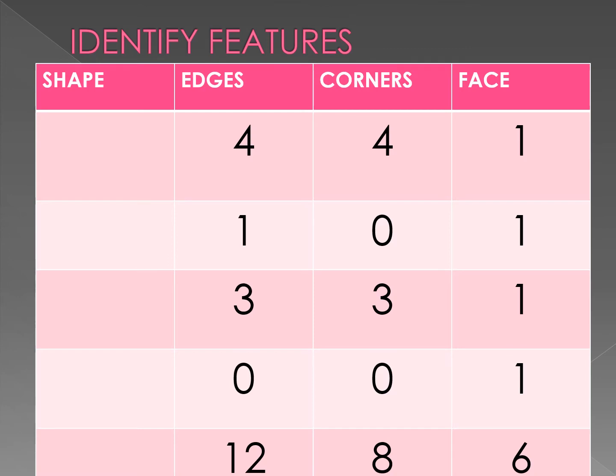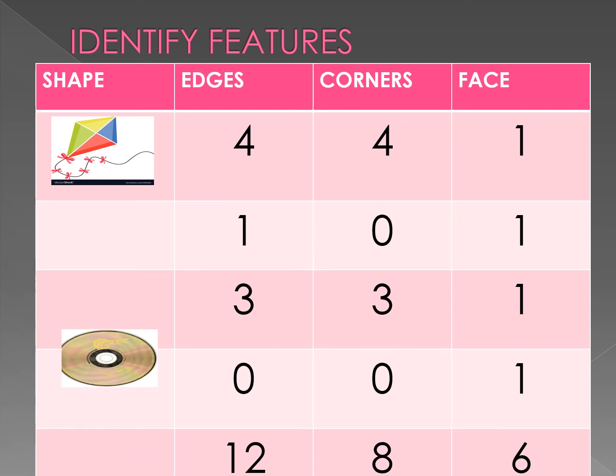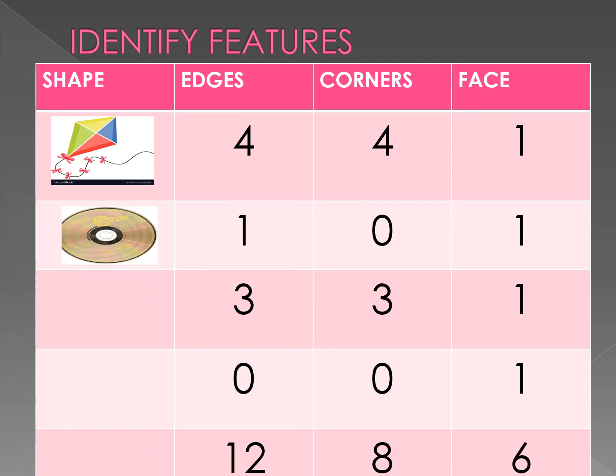Now we know about different shapes. The first shape is a kite, meaning square. It has 4 edges, 4 corners, and 1 face. The second is a CD. This is a circular shape with 1 edge, 0 corners, and 1 face.